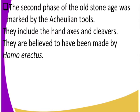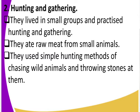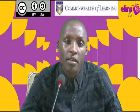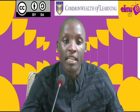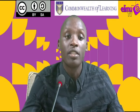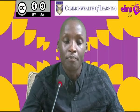Early man during the Old Stone Age was a hunter and gatherer, meaning he practiced hunting and gathering. Living in small groups, they hunted and gathered, eating raw meat from small animals such as birds and small insects. They had not yet invented fire. They used hunting methods of chasing wild animals and throwing stones at them. Living in forests, they also ate fruits from trees.